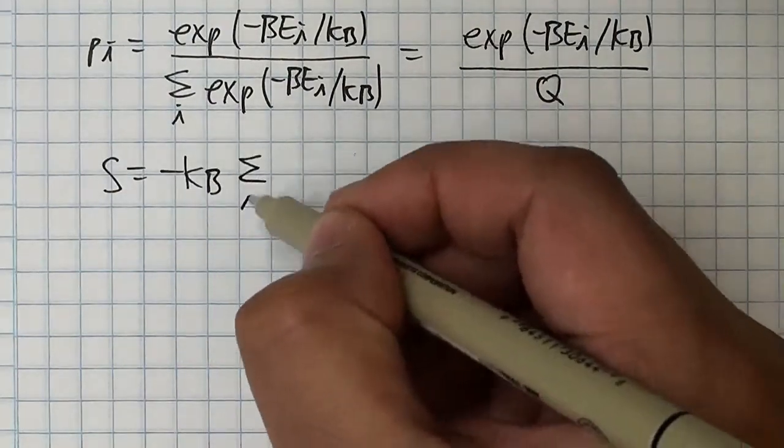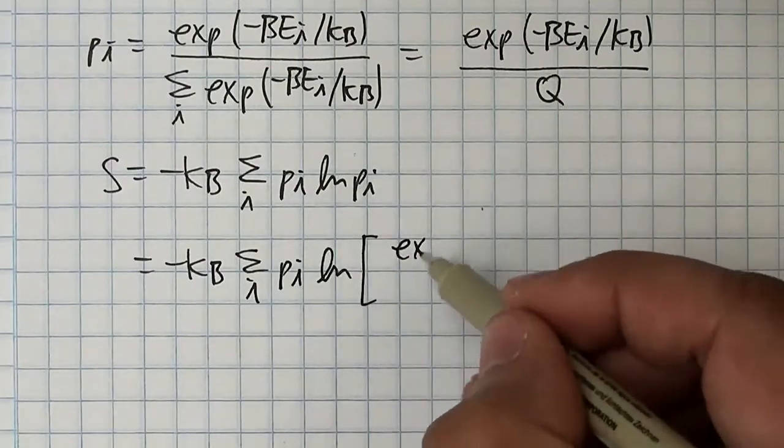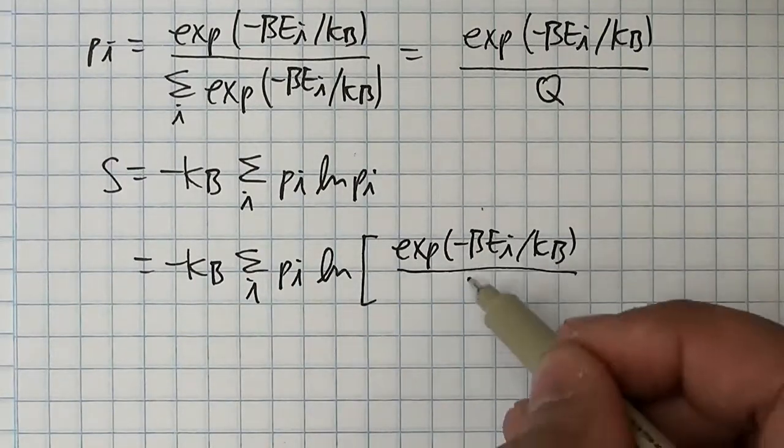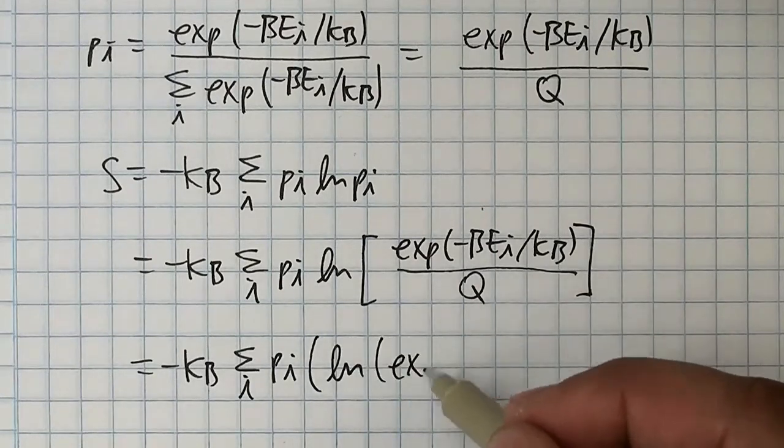Starting with the Gibbs entropy, I'm going to leave the first pi as it is because this is just the form of an expected value for a probability distribution. For the second pi, the one being logged, we can split it up into the difference of two terms.